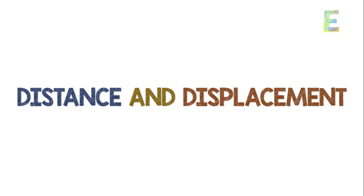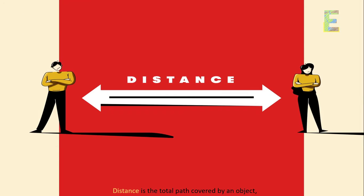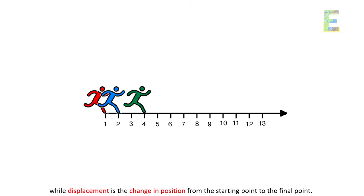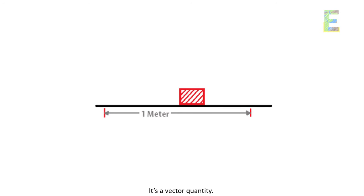Distance and displacement. Distance is the total path covered by an object, while displacement is the change in position from the starting point to the final point. It's a vector quantity.